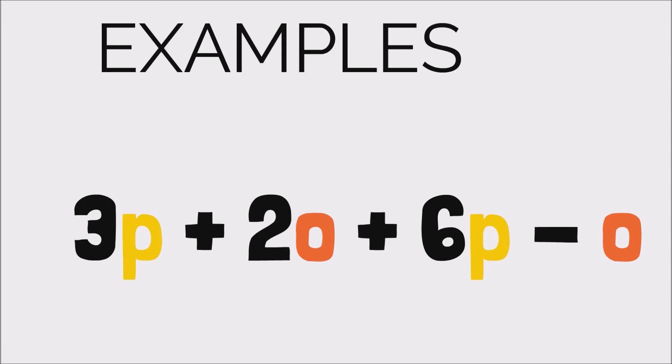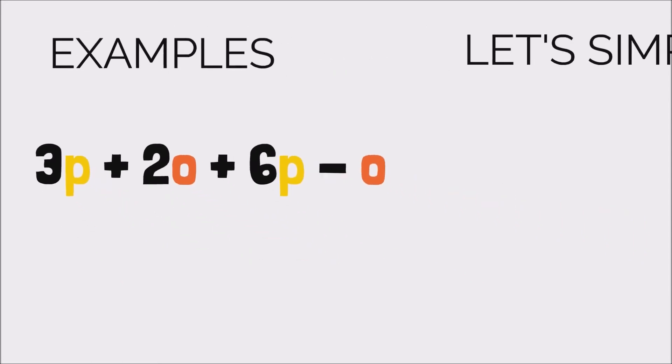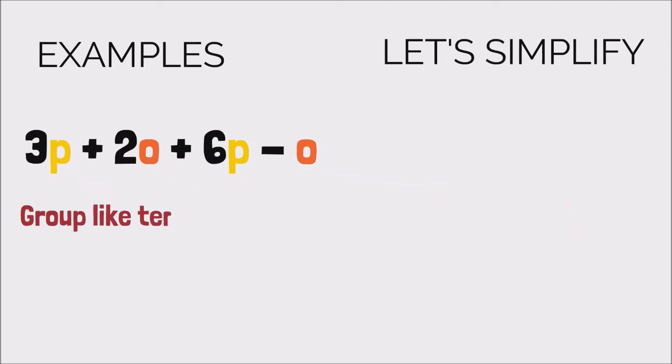So the first thing we're gonna do is we're gonna do something called grouping like terms to each other. What this means is we're gonna rearrange the expression so that all the like terms are directly beside each other. So we want to move the 6P so that it's directly beside the 3P, and then we want to move the 2O beside the O because those are like terms. And so we're gonna rewrite our expression.